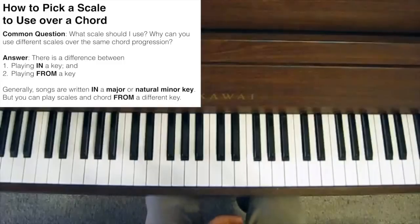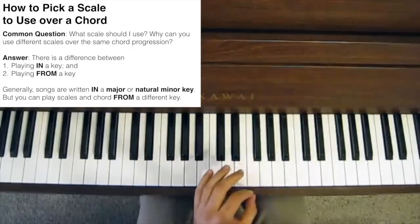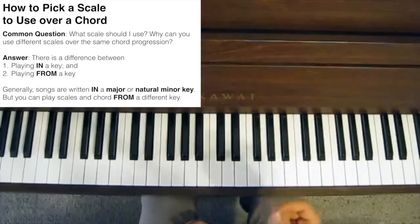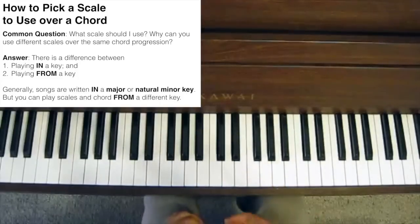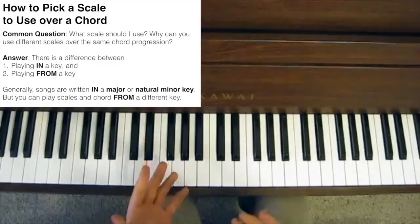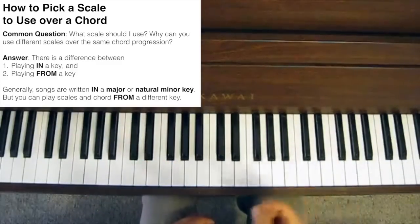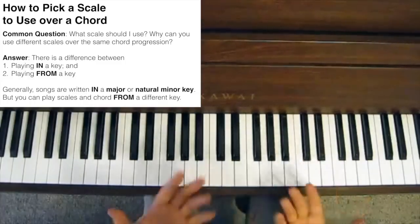In order to answer those questions, we need to differentiate between playing in a key and playing from a key. Songs are generally written in a major or a natural minor key — the natural minor being a mode of the major scale anyway. So you generally don't see songs with a harmonic minor key signature or a whole tone key signature or things like that. But you can play scales and substitute in chords from a different key into a given song or chord progression.